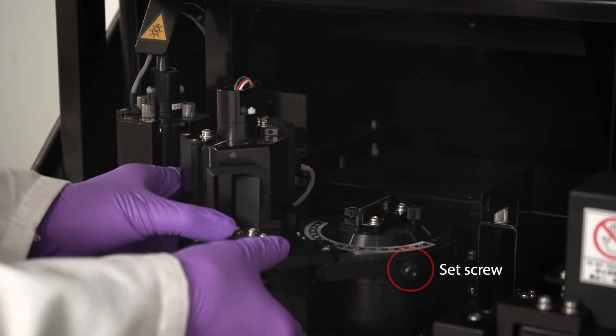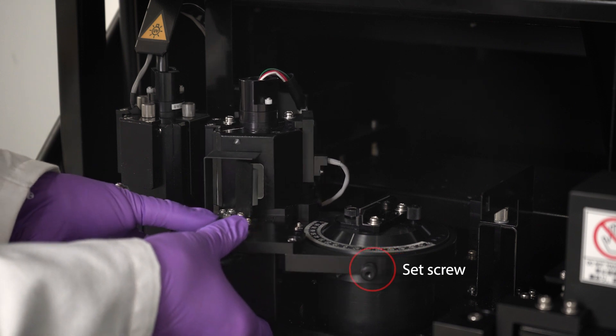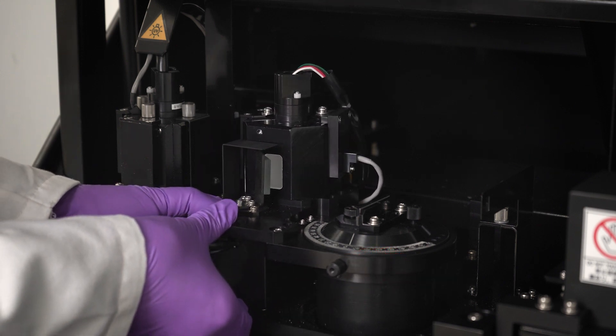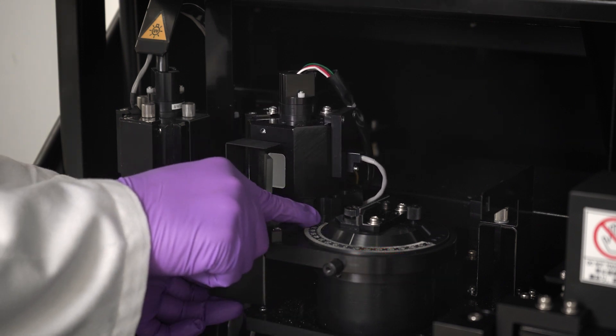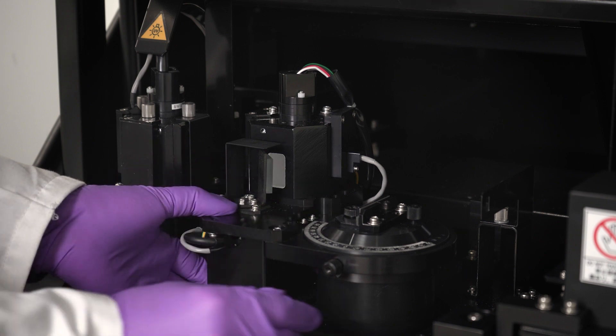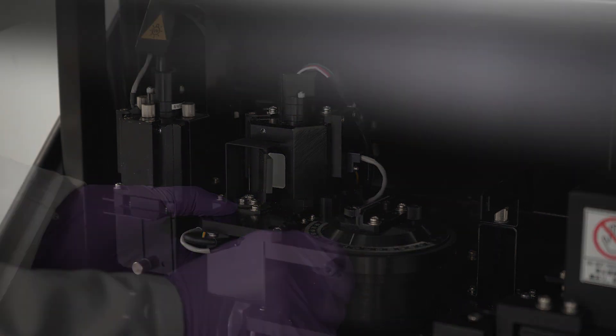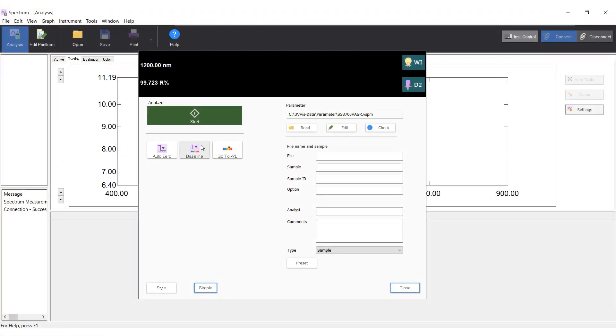With nothing on the sample stage, loosen the sample detector set screw and rotate the Integrating Sphere to a zero-degree position. Then tighten the set screw. Close the sample compartment. From the software, click Baseline to perform baseline correction.